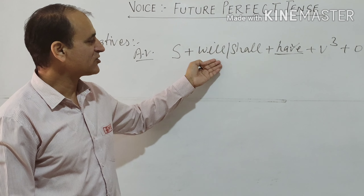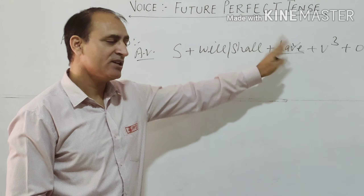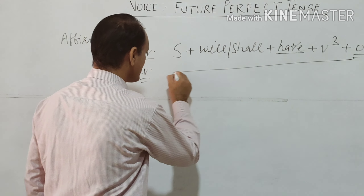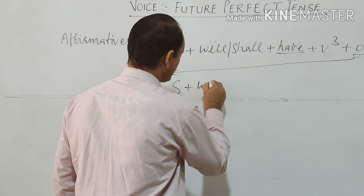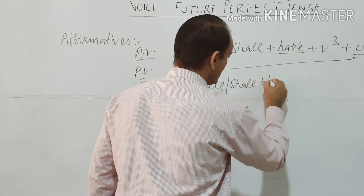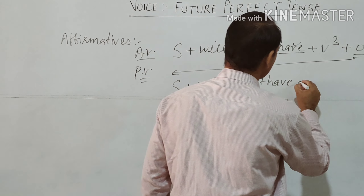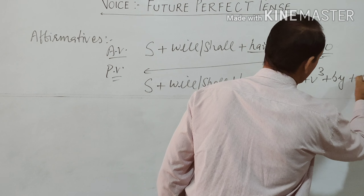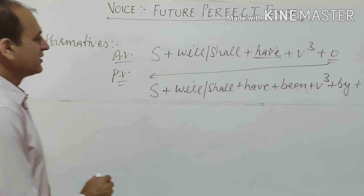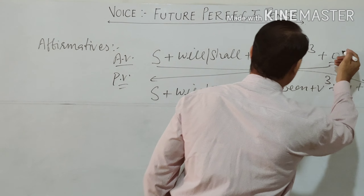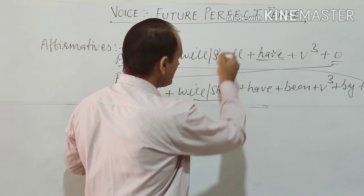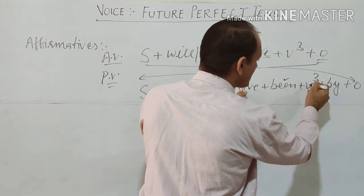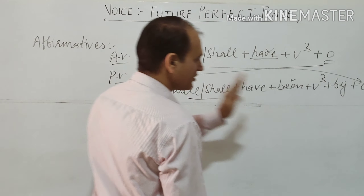The changes happen only in the choice of will or shall, not in have. When we change the structure into passive voice, we bring the object into the place of subject. Subject is followed by will or shall, then have, followed by being, then the third form of the verb, then preposition by, and then the object. So the object is taken into the place of subject, will or shall remain, have comes next, being and the third form of the verb are added, then by, and the subject moves to the place of object.